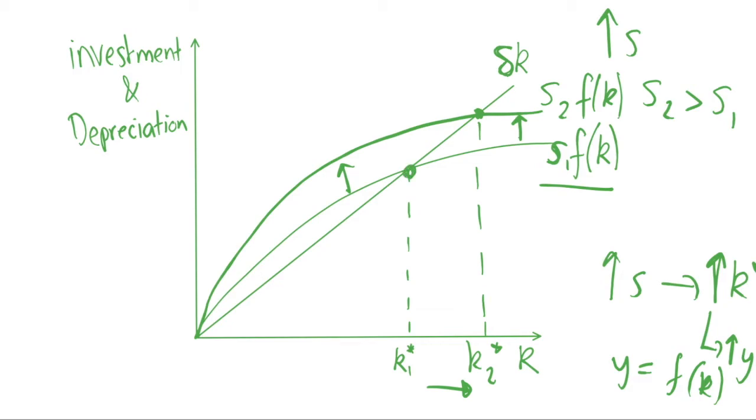Let's imagine we start at k1 star, we're originally at this steady state and we increase the savings rate to s2 and we shift to this new curve. What do we have now? We now take investment based on this curve and we still have the same depreciation because that has stayed the same. So investment is now greater than depreciation.